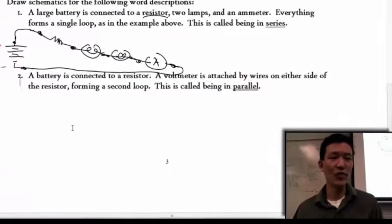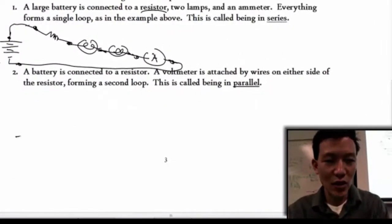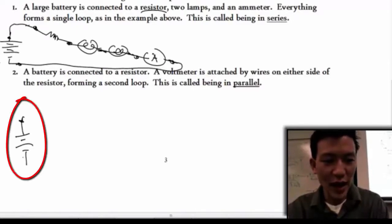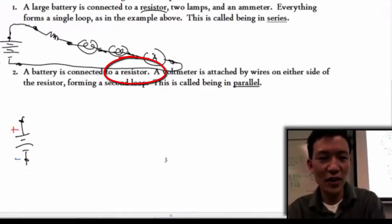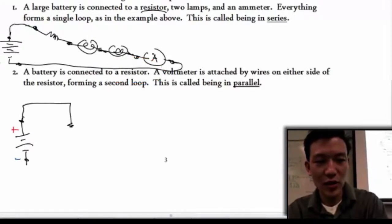Now contrast that to number two. Here we have a battery. So let's go ahead and draw out our battery. It doesn't really say small or big. It doesn't matter. I like to have it so that the positive end faces up and the negative end is on the bottom here. And this is now connected to a resistor. Piece of cake. So there's my resistor.